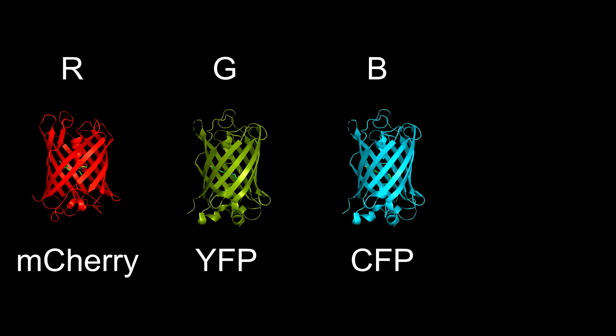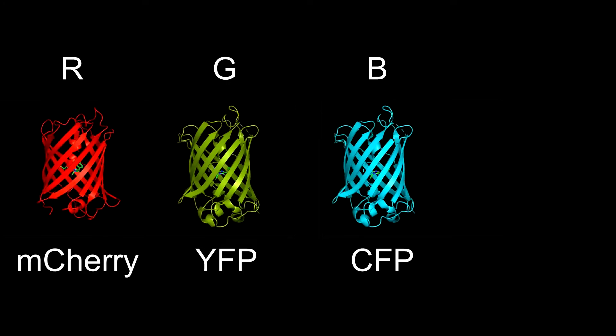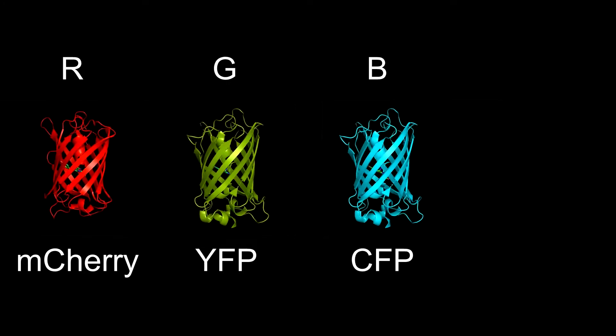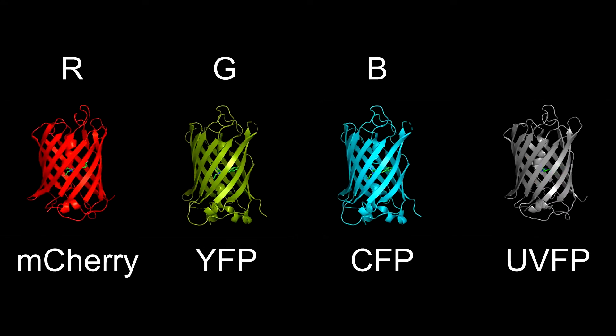Computer screens can display every color, yet if we zoom in enough, we see that each pixel consists of three colors: red, green, and blue. To make an organism fluoresce any specific color, all we need are three fluorescent proteins — one in red, one in green, and one in blue. The researchers used mCherry, yellow fluorescent protein, and cyan fluorescent protein for this purpose, as well as a fourth fluorescent protein called UV fluorescent protein.